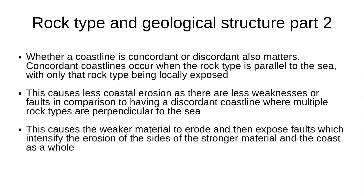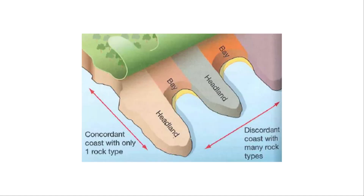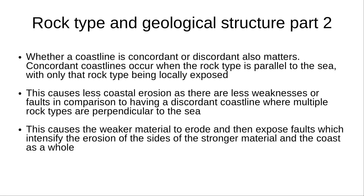Whether a coastline is concordant or not also matters. Concordant coastlines occur when the rock type is parallel to the sea, with only that rock type being locally exposed. This causes less coastal erosion as there are fewer weaknesses or faults, in comparison to a discordant coastline where multiple rock types are perpendicular to the sea, causing the weaker material to erode and expose faults which intensify erosion of the stronger material and the coast as a whole.